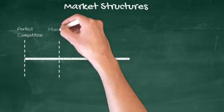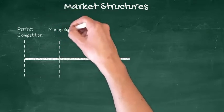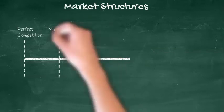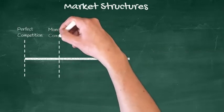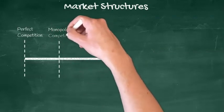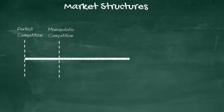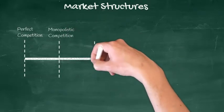We then have monopolistic competition, where there are again a large number of buyers and sellers, but this time each seller sells a slightly differentiated product. Examples here include maybe your local hairdresser or bed and breakfast operators.